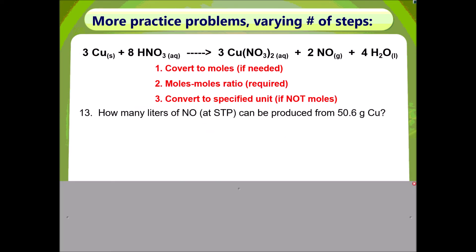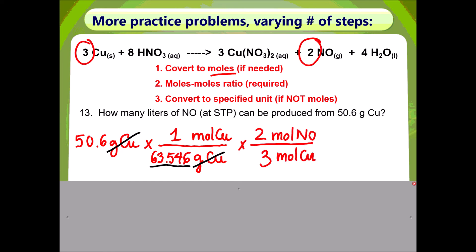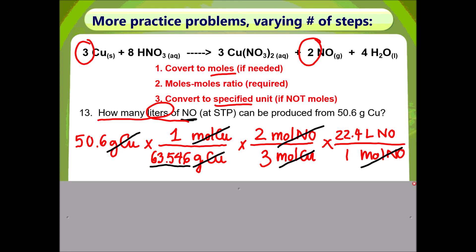Problem 13: how many liters of nitrogen monoxide at STP can be produced from 50.6 grams of copper? Your given is grams of copper, therefore you have to do Step 1, converting to moles. Get rid of grams of copper by placing it on the bottom, and put moles of copper on top. Step 2, moles-to-moles ratio: get rid of moles of copper by placing it at the bottom, and put moles of nitrogen monoxide on top — the numbers come from the coefficients. The specified unit is liters of nitrogen monoxide, so you need Step 3: get rid of moles of nitrogen monoxide on the bottom and put liters of nitrogen monoxide on top. Your final answer is 11.9 liters of nitrogen monoxide.